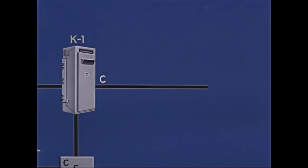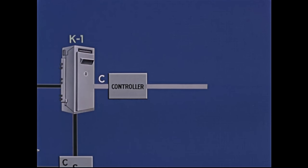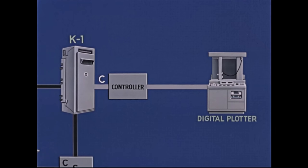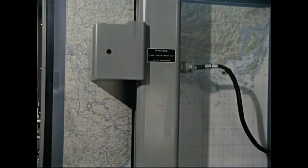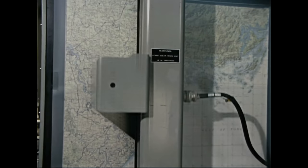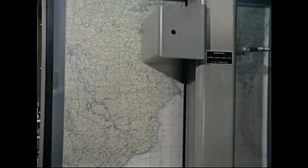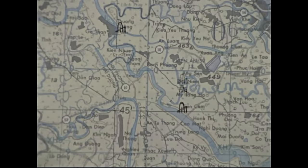Channel C in the K-1 connects the computer through the controller to any of three equipments. The controller is simply a switching device that makes the connection to the equipment selected. One of the equipments is the digital plotter — a plotting device that provides a rapid means of presenting intelligence data graphically. It plots geographic points automatically based on information provided by the computer from other sources, such as the code matrix block or the database. In addition, letter, number, or order of battle symbols can be annotated on the plot.